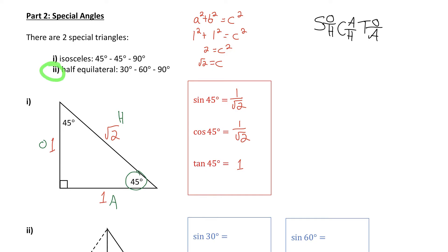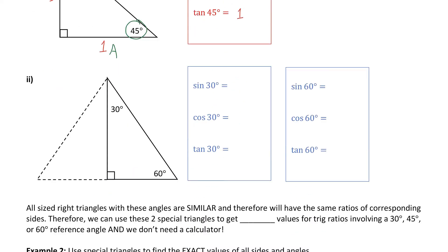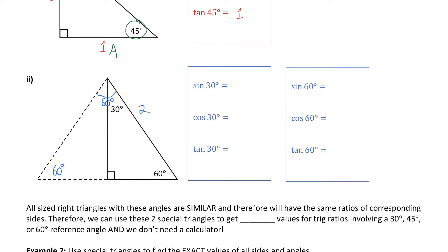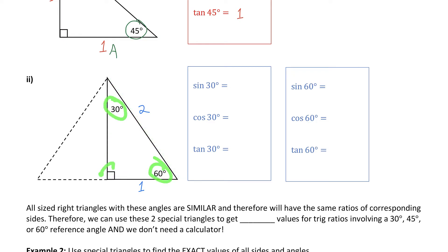The other special triangle is a half equilateral triangle with angles of 30, 60, and 90. It used to be an equilateral triangle, where all three angles would be 60 degrees and all three side lengths would be the same. We assign them length 2. This equilateral triangle has been cut in half — that's why this angle is now 30 degrees — and this side length would be half of 2, making it 1. Now we can focus on this half of the equilateral triangle where I know all the angles, and currently I know two of the sides.